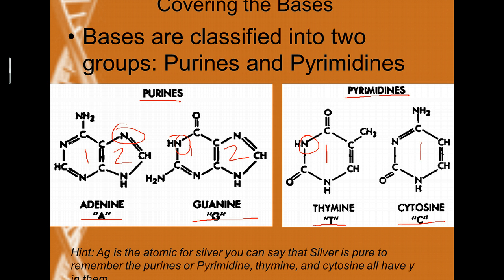Here's a hint on how to remember the difference between purines and pyrimidines. If you look at the word pyrimidine, thymine, and cytosine, they all have a Y in them — that's an easy way to remember the pyrimidines. For the purines, you could use process of elimination. Or, on the periodic table, G is silver, so you can think of pure silver. If you want pure silver, you'd love to have two rings of pure silver — a double ring.